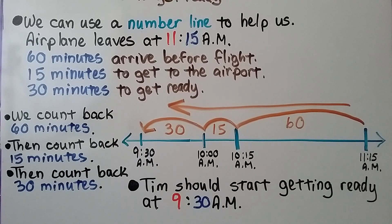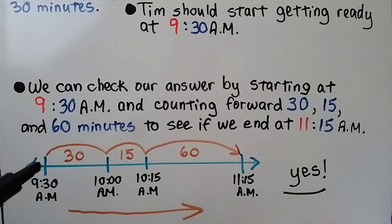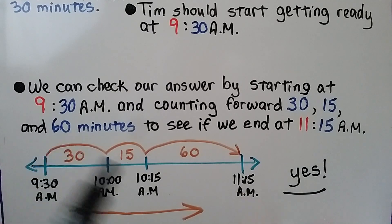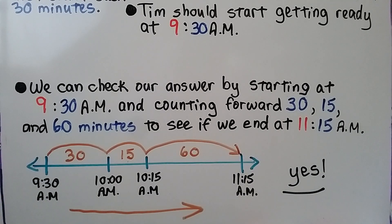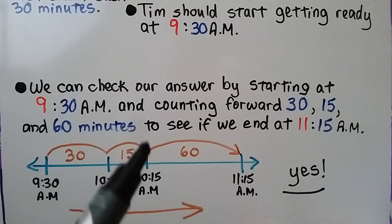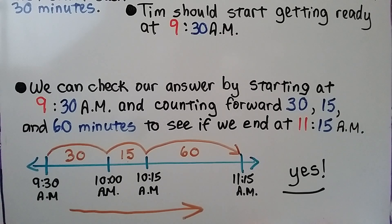So Tim should start getting ready at 9:30 a.m. or earlier. We can check our answer by starting at 9:30 and counting forwards: 30 minutes brings us to 10:00, then adding 15 minutes puts us at 10:15, then adding 60 minutes (one hour) brings us to 11:15 a.m. when his flight leaves. That confirms our answer is correct.